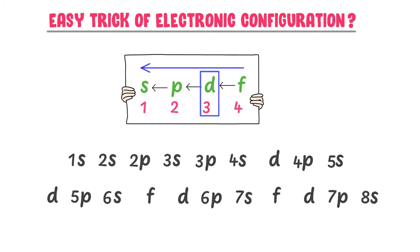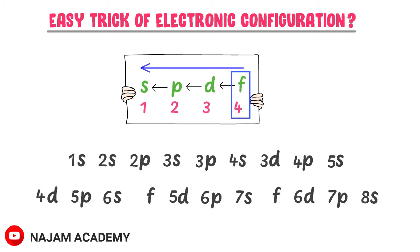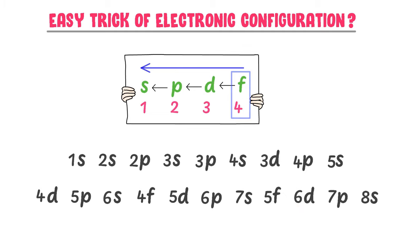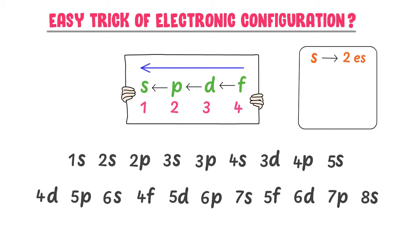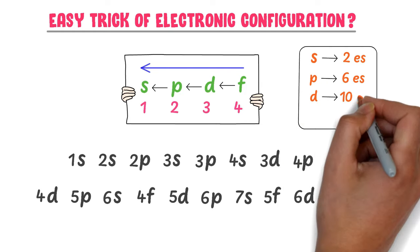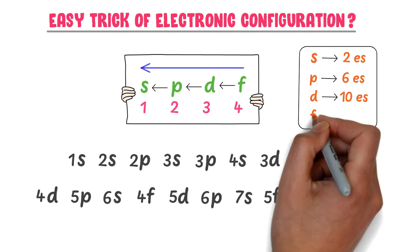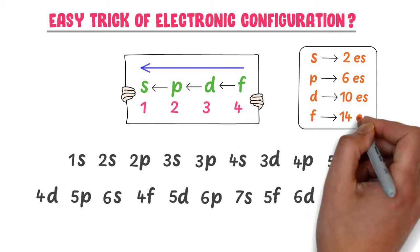D is the third orbital, so start numbering D orbitals from 3. Hence: 3D, 4D, 5D, and 6D. F is the fourth orbital, so start numbering F orbital from 4. Hence: 4F and 5F. Also, we know that S orbital can accommodate 2 electrons, P orbital can accommodate 6 electrons, D orbital can accommodate 10 electrons, and F orbital can accommodate 14 electrons.